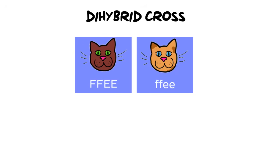Hi everybody and welcome back. Today we're going to be looking at a dihybrid cross. Up until this point, you've been working with monohybrid crosses — mono being one trait at a time. This time we are going to do a dihybrid, which means we're going to do two traits at the same time.